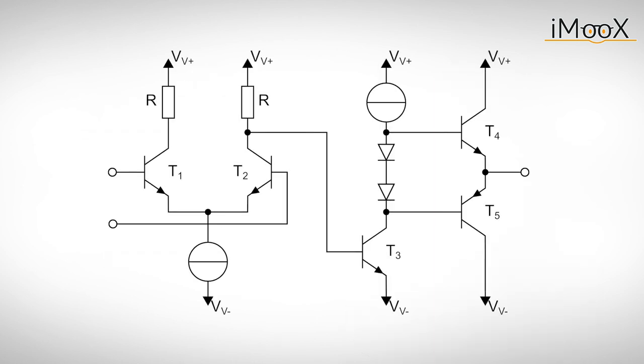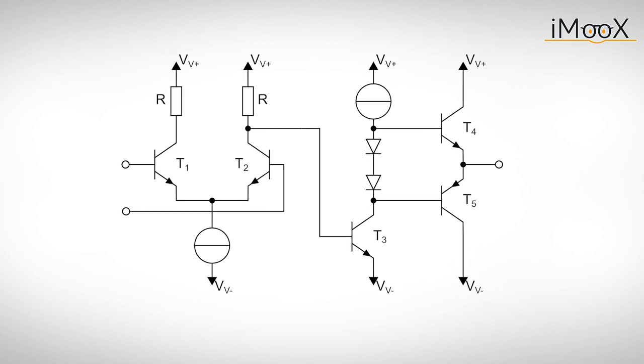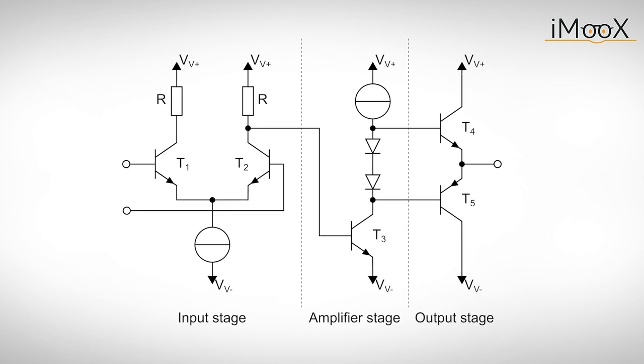The inside of an operational amplifier looks quite messy at first, but as the old Romans said, divide and conquer. So we divide the operational amplifier into three different stages. The input stage is located on the left-hand side and is responsible for detecting the difference between two input signals.